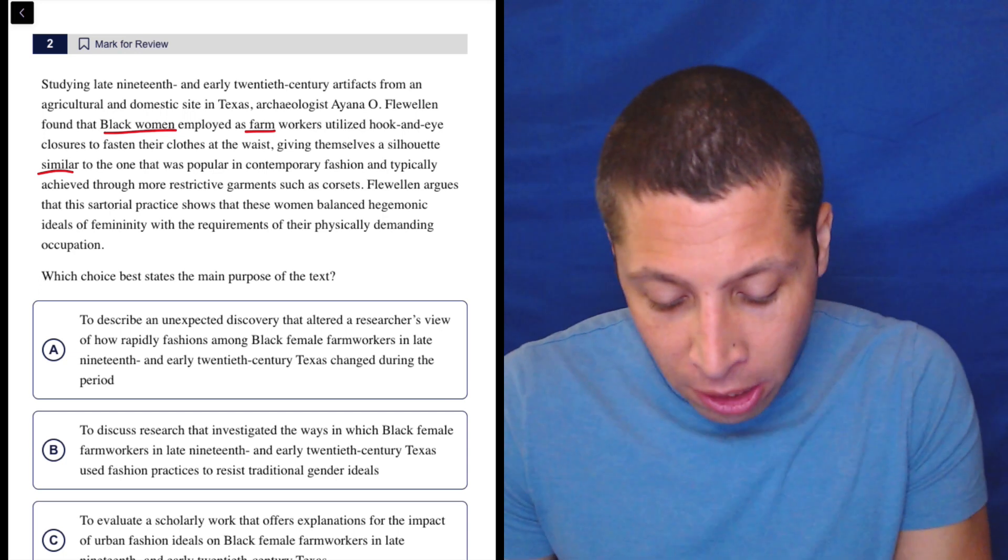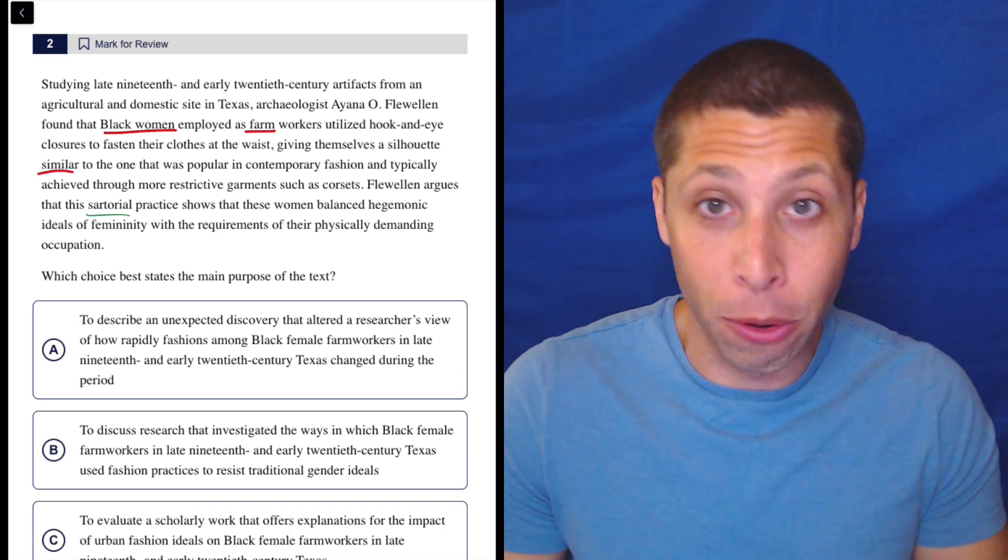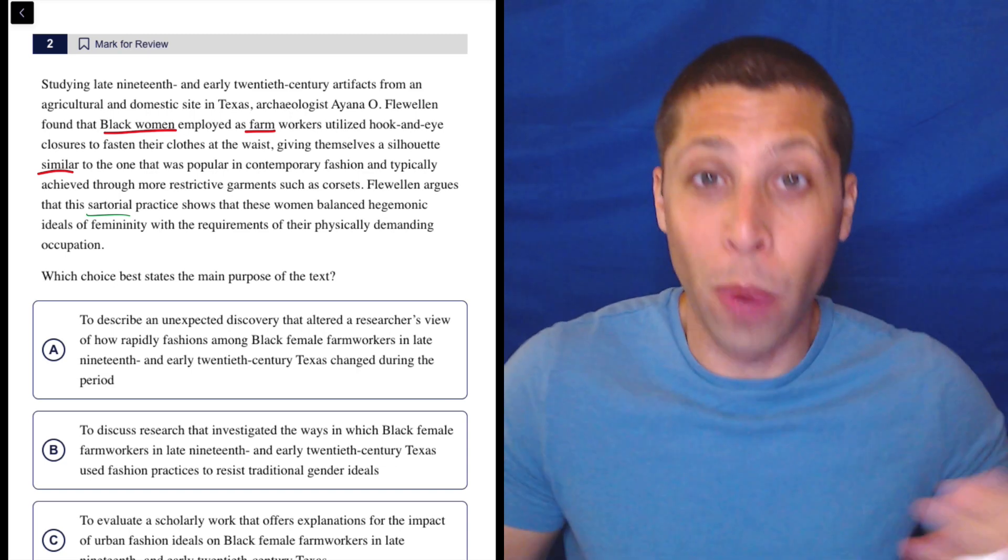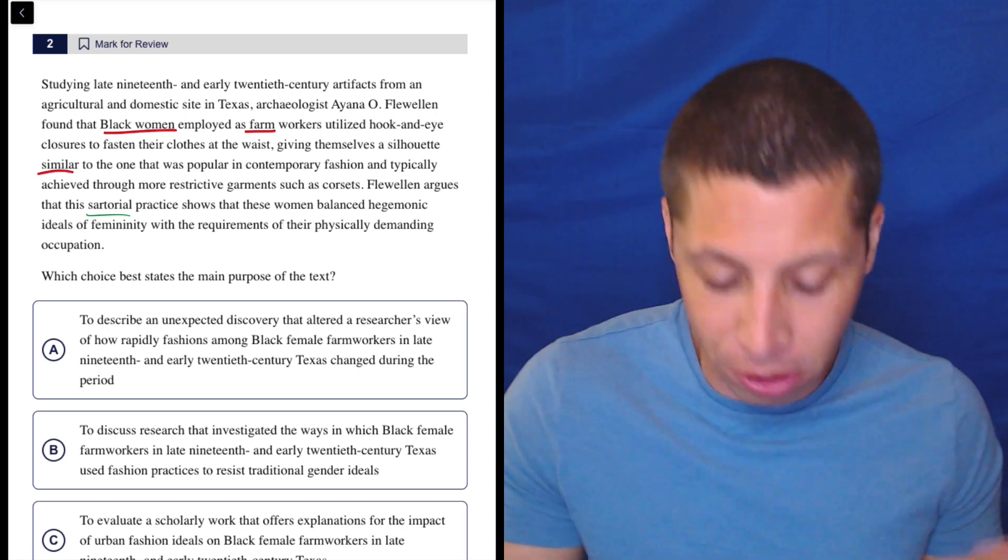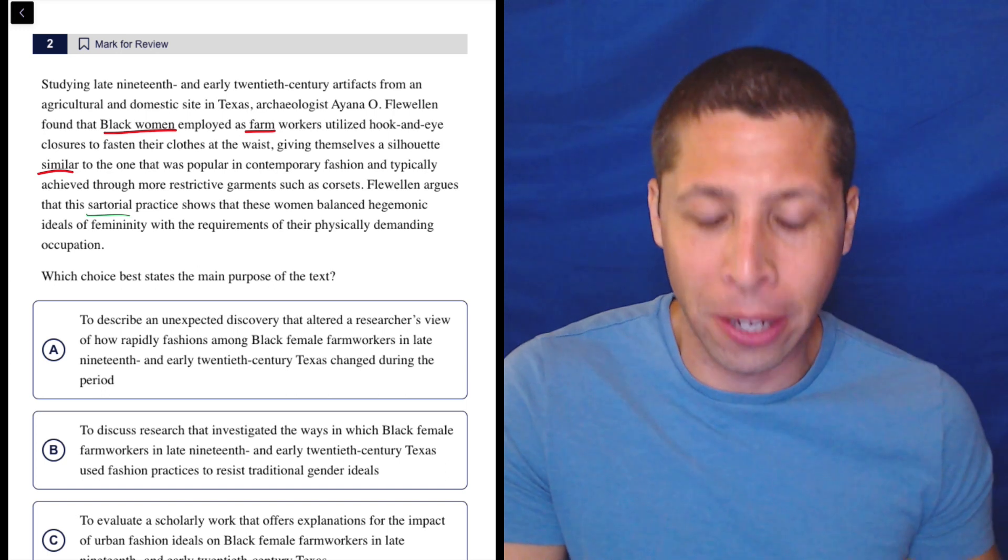I don't think you need to know them in order to get this. Sartorial just means something has to do with clothes. It's a very specific word. It just means it has to do with what you wear, what clothes you have. So a sartorial practice is a practice involving clothes. It's one of those words that seems important, but it's just saying what we already know when we're talking about clothes.